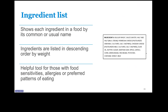When you read the ingredient list, the ingredients are listed in descending order by weight or amount. Foods with more than one ingredient must have an ingredient list on the label, and usually they're right under the nutrition label.